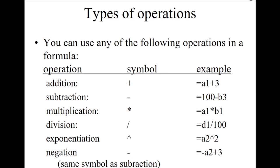For example, A1 is a valid cell reference because the column name comes before the row number. It is invalid if the row number comes before the column name — for example '1A' is not allowed. In formulas, you can mix cell references with literal values: for example, A1+3, or A1-B2, or A1*C3, or A1/100.